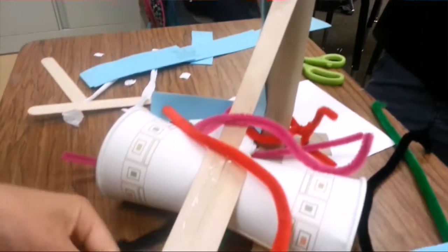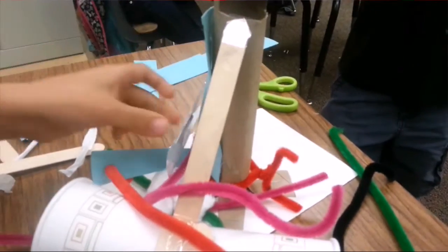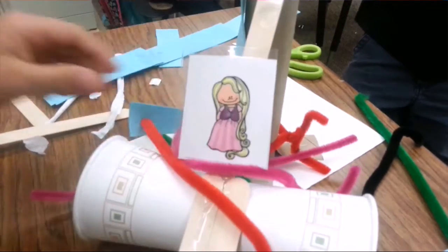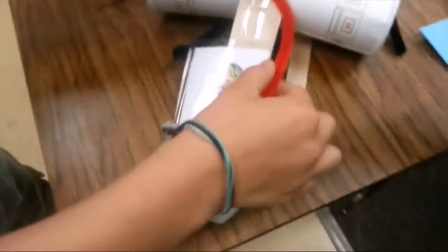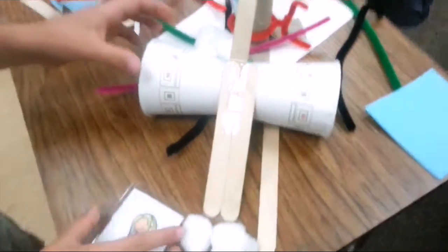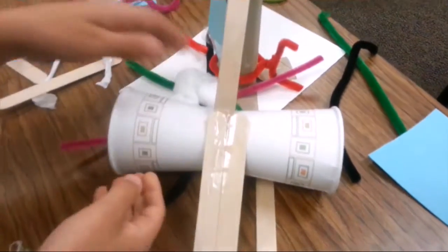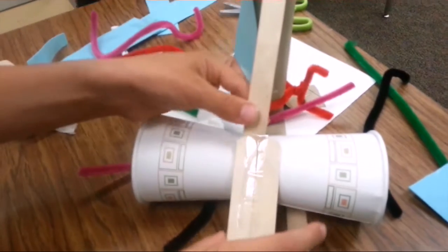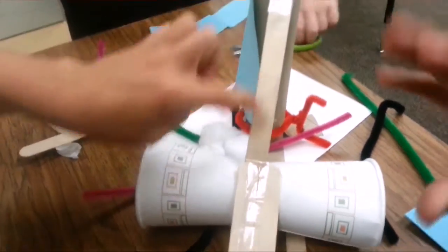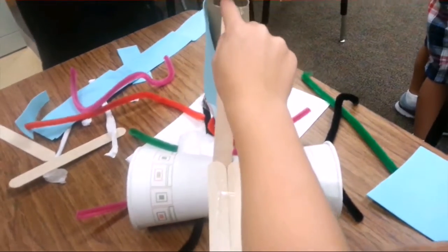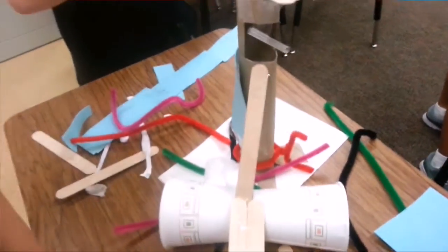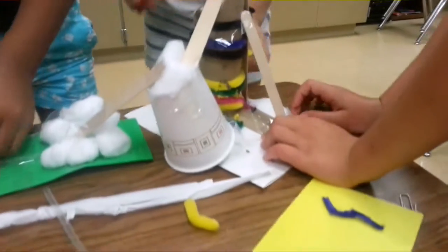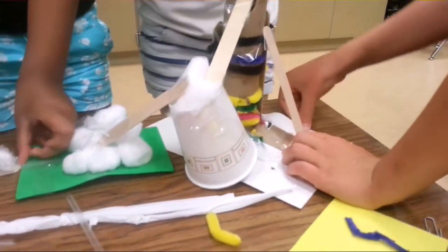So what we did is Rapunzel just goes down the slide and she lands on this and what we did to do it, we just cut these and put them together so we would hold this up and then we take these little popsicle sticks together and put the little fuzzies at the bottom. That's what we did. That's where there's all these pieces everywhere.